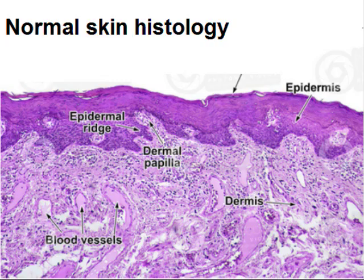Just for comparison, normal skin histology: Normal skin is composed of epidermis and dermis. There are epidermal ridges and there are dermal papillae.